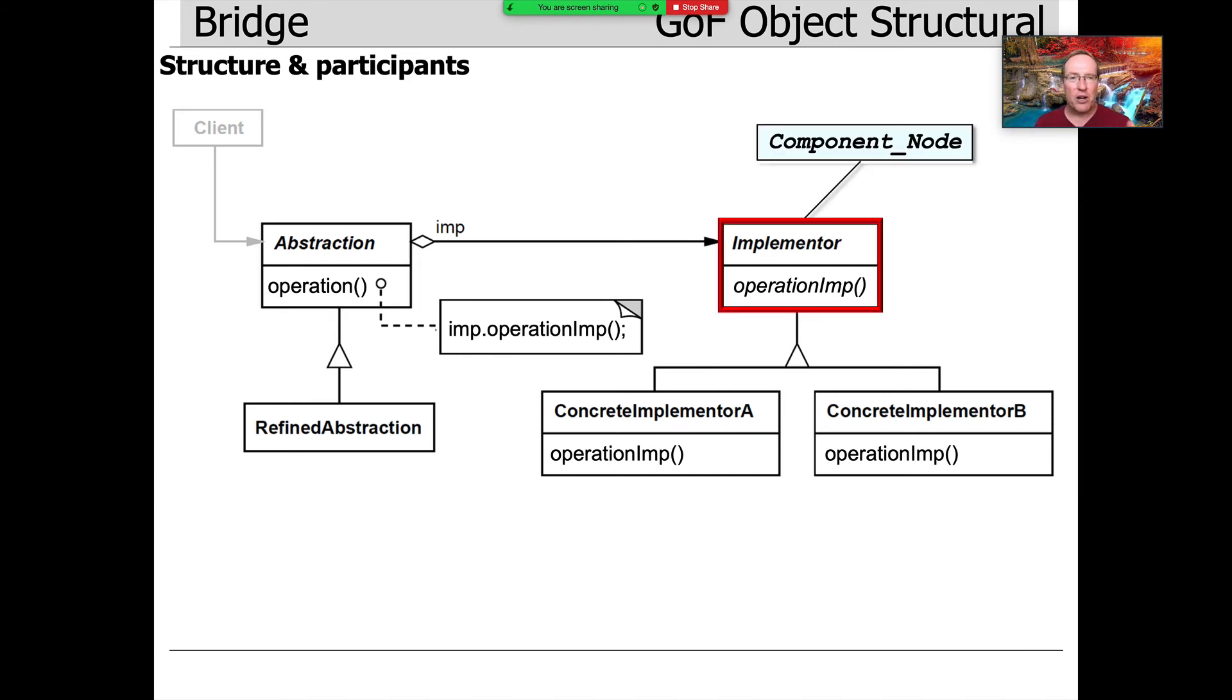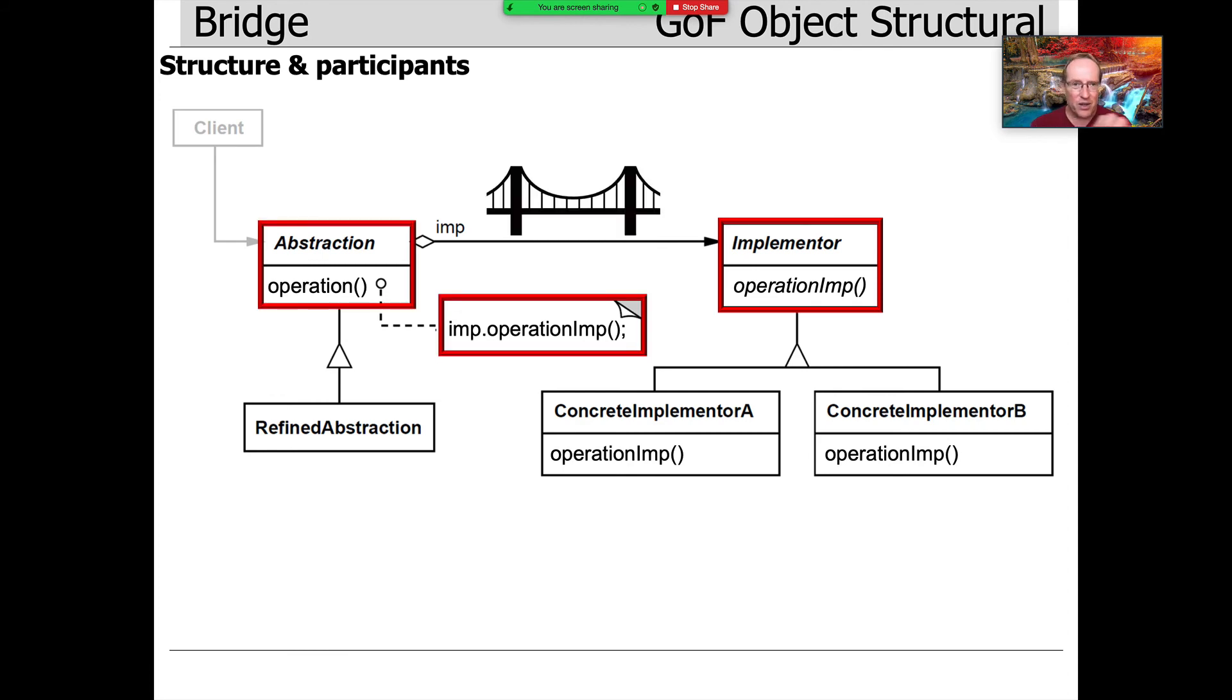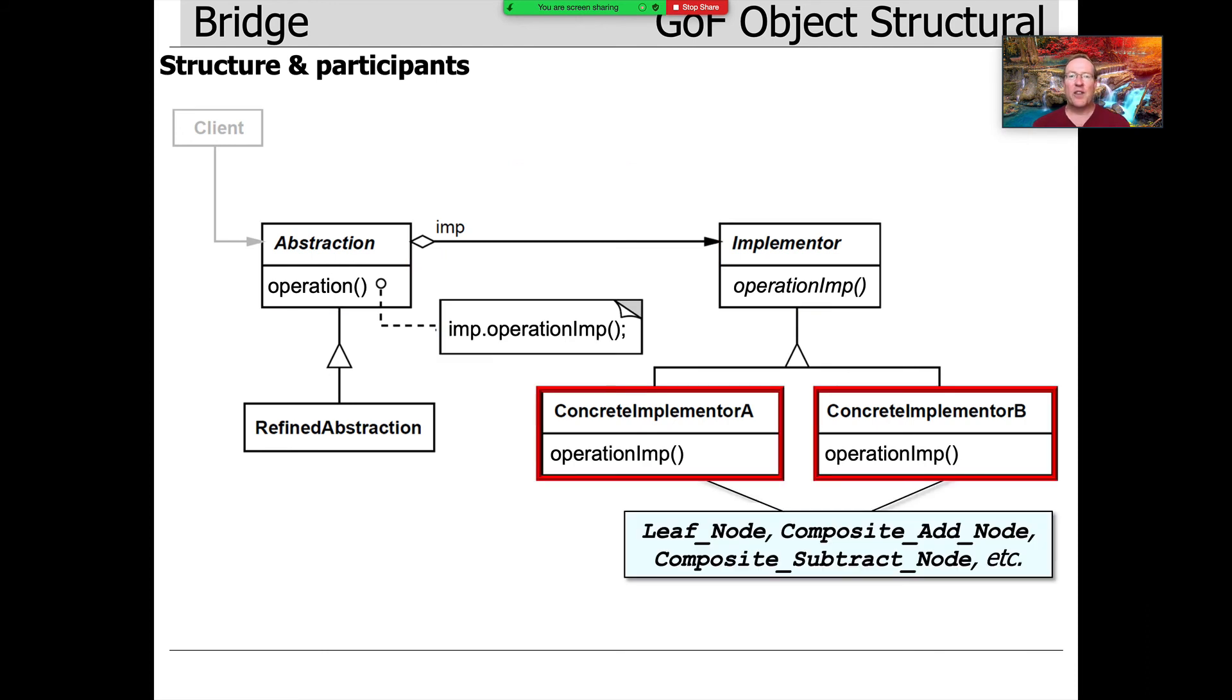We have an implementer super class or the base class, which in our world is the component node abstract base class. We have this connection between the abstraction and the implementation, which is typically a reference or a pointer or a smart pointer, so that when methods are called in the abstraction, they forward over to the implementer hierarchy. That's the bridge.